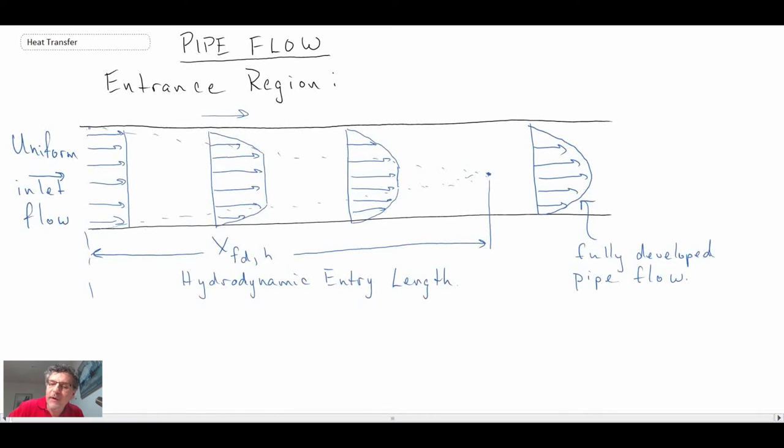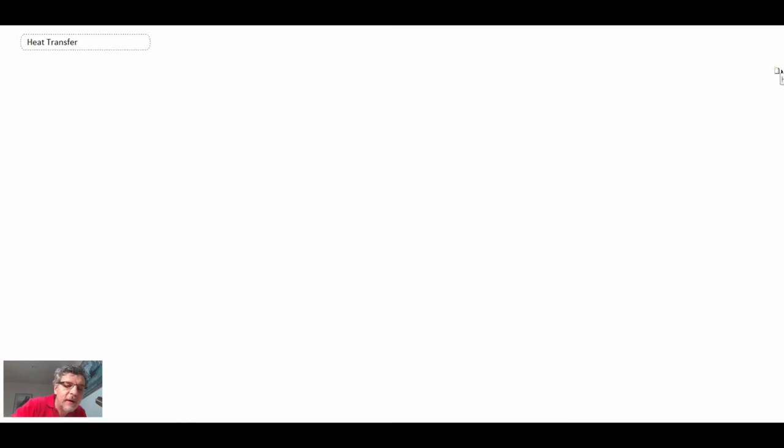Now when we're looking at pipe flow, we use a non-dimensional number to characterize what is happening, very much like we saw for the flat plate. But here we use Reynolds number based on diameter. So that is the characteristic length scale. The velocity that we use is a mean velocity, which we'll take a look at in a moment, and then we have our dynamic viscosity.